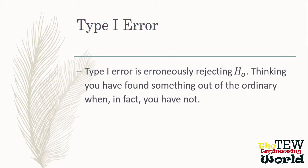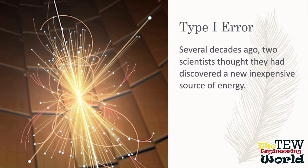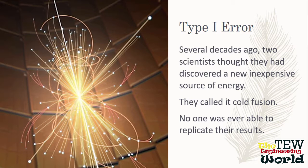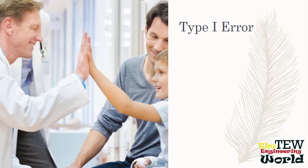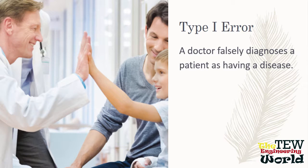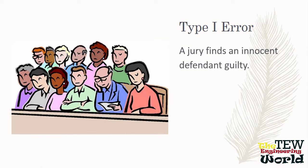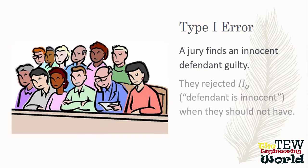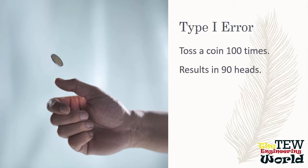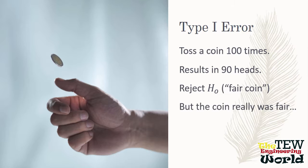Some examples of Type 1 error: several decades ago, a couple of scientists thought they had discovered a new, inexpensive source of energy — they called it cold fusion — but no one was ever able to duplicate their results. Another example: a doctor falsely diagnoses a patient as having a disease — that's a false positive and a Type 1 error. If a jury finds an innocent defendant guilty, they rejected the null hypothesis when they should not have. Suppose you toss a coin 100 times and get 90 heads — we would probably reject the null hypothesis that it is a fair coin.